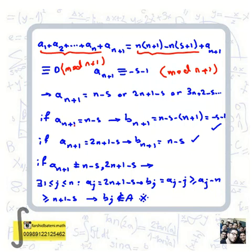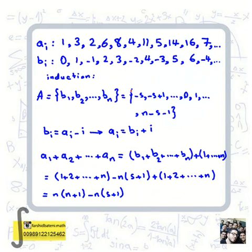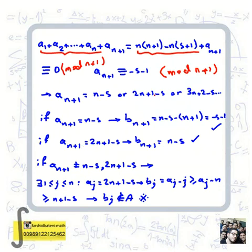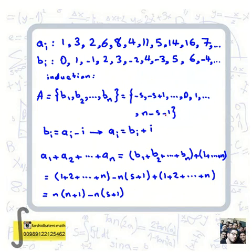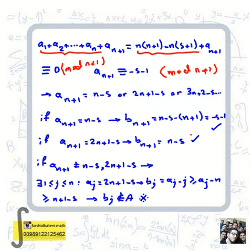If a_{n+1} = n-s and this term is new (not previously chosen), then b_{n+1} = (n-s) - (n+1) = -s-1. This gives us n+1 consecutive integers, extending our inductive hypothesis. If instead a_{n+1} = 2n+1-s, then b_{n+1} = (2n+1-s) - (n+1) = n-s, which again gives n+1 consecutive integers. In both cases the induction holds.